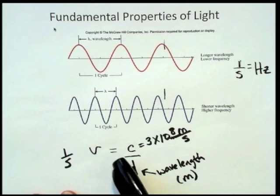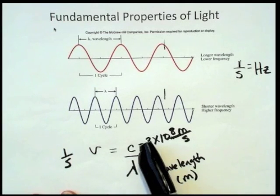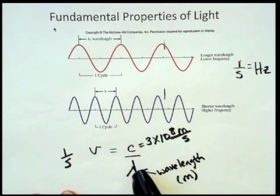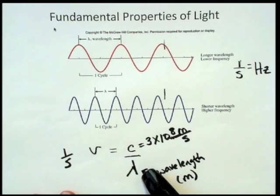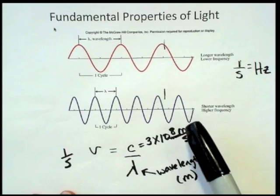So back and forth, it's this relationship, it's an inverse relationship. This is the constant, and this is the relationship. As the wavelength gets longer, the frequency is lower.